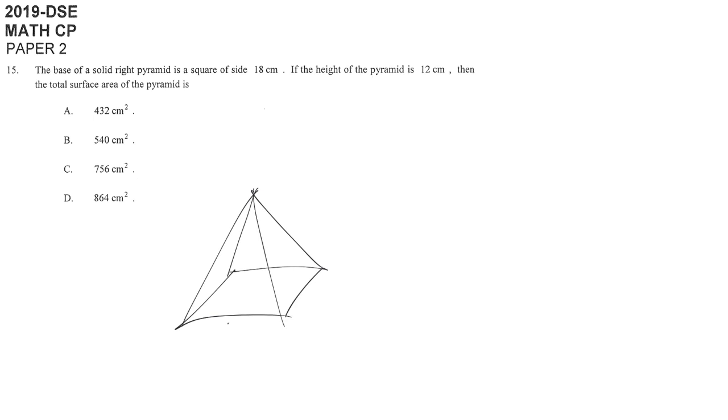And then the side length is 18. If the height of the pyramid, the height here is 12, and then we want to get the total surface area. The total surface area, that means the total of the surface area of all faces.